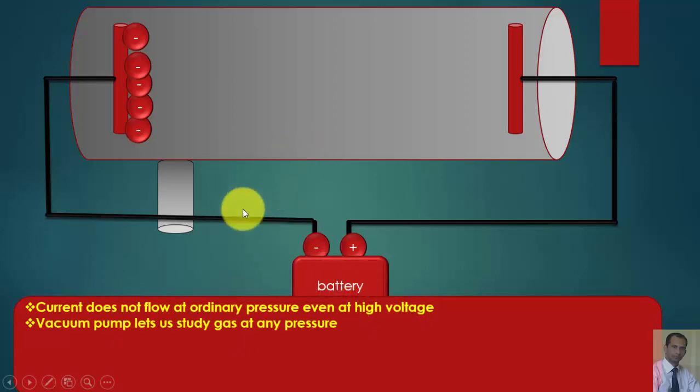The vacuum pump lets us study gas at any pressure. A uniform glow is observed under reduced pressure at 5 to 10 kV. When 5 to 10 kilovolt voltage is applied, a uniform glow is observed inside this discharge tube.